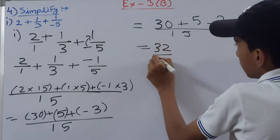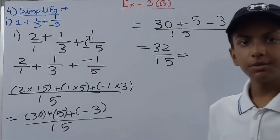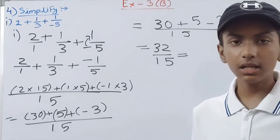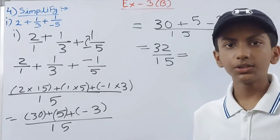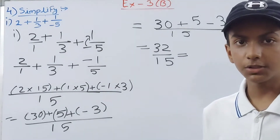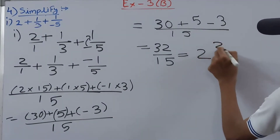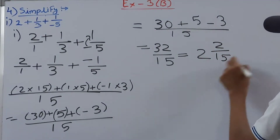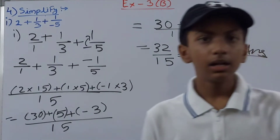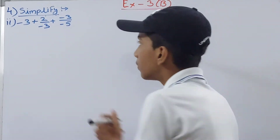We convert this improper fraction 32/15 into a mixed number — always remember to convert an improper fraction answer into a mixed one. We get 2 whole 2/15, which cannot be simplified further. That is our answer for part one.